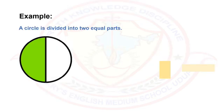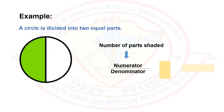A circle is divided into two equal parts, and you can see that one part is shaded using green color. So what is the fraction of the shaded part? To write the fraction of the shaded part, we need to know about numerator and denominator. Let's see. Numerator means number of parts shaded.